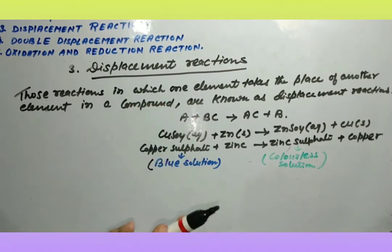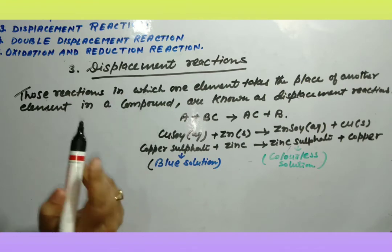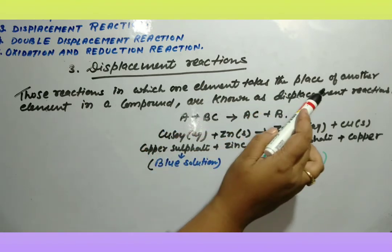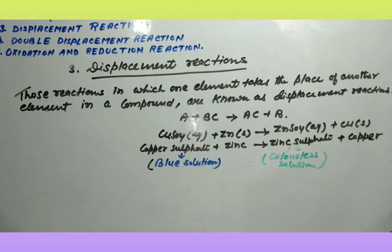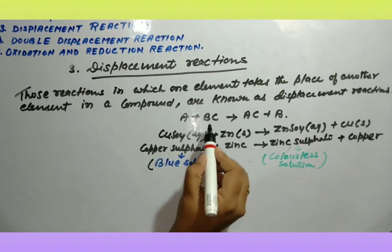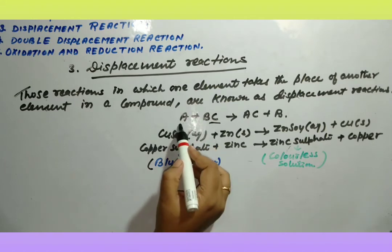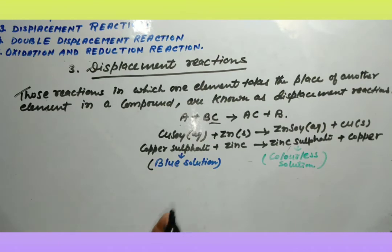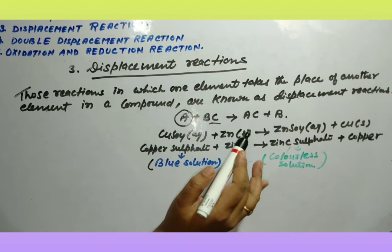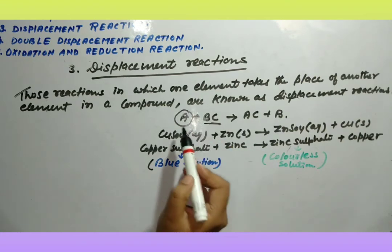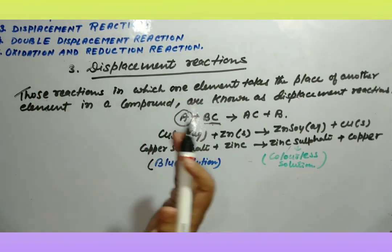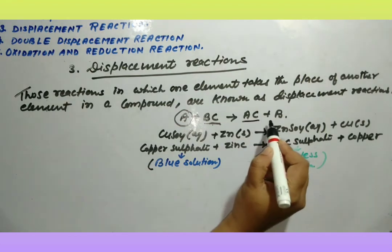Next: displacement reaction. Displacement का मतलब होता है जगह को change करना। Those reactions in which one element takes the place of another element in a compound are known as displacement reaction. Example: A + BC → AC + B. इसमें C ने जगह change किया, A के पास आ गया। In general: a more reactive element displaces a less reactive element from its compound।